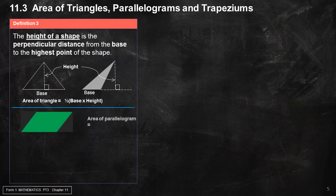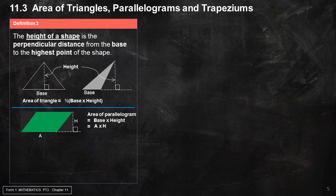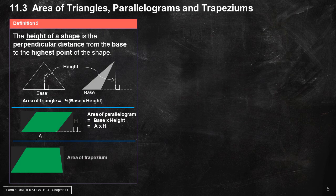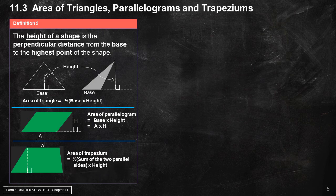Area of Parallelograms equals base times height, equals A times H. Area of Trapezium equals one-half times the sum of the two parallel sides times height, equals one-half times A plus B times H.